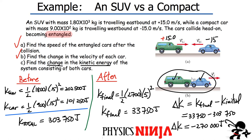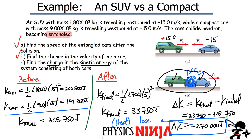Where did that energy go? Most of it turns into heat — imagine bending all that metal. Some is propagated as sound, but most goes into deforming the metal and is lost as heat. In a perfectly inelastic collision, you start with a lot of kinetic energy and end up with very little. We lost quite a bit in that collision.